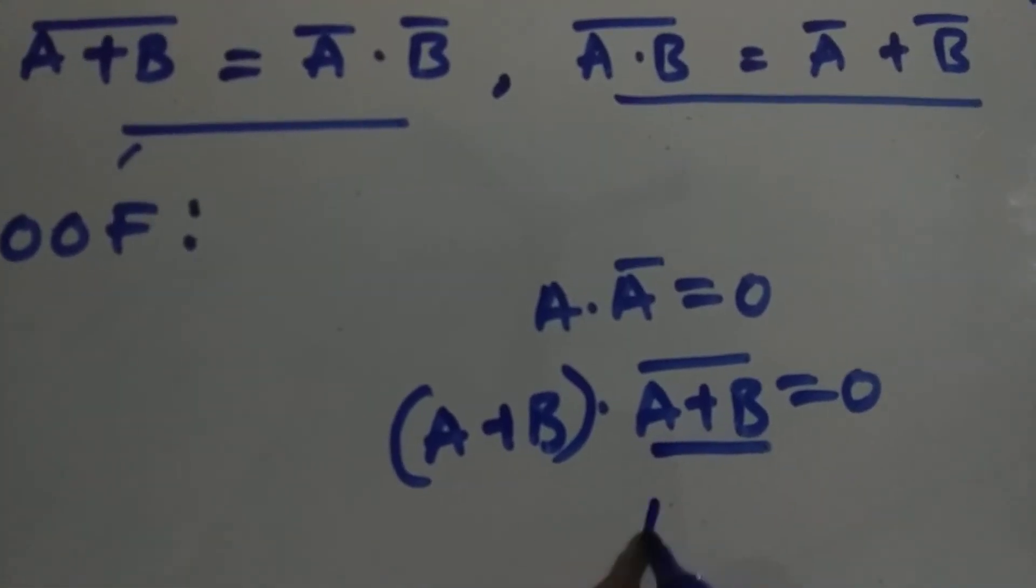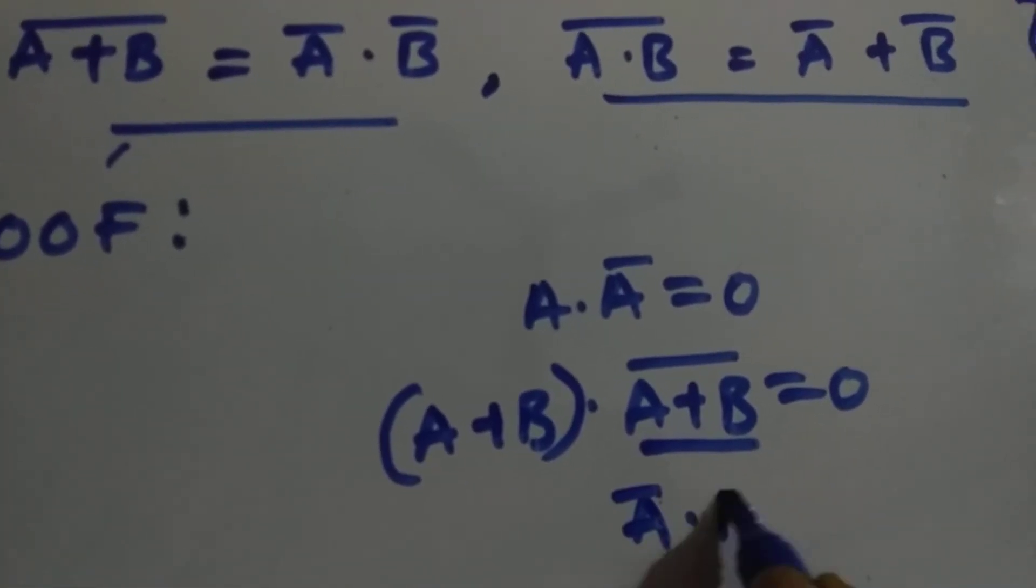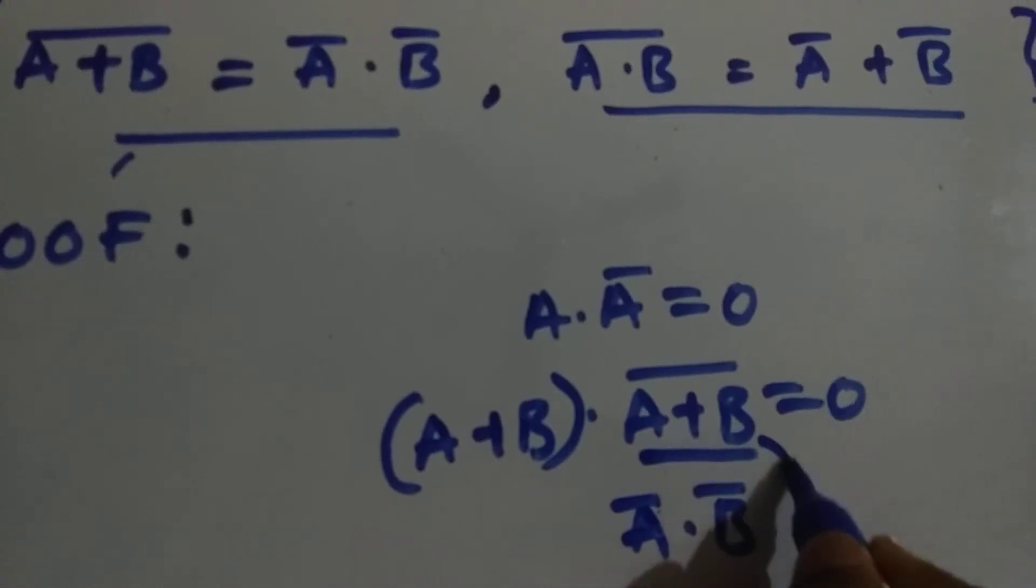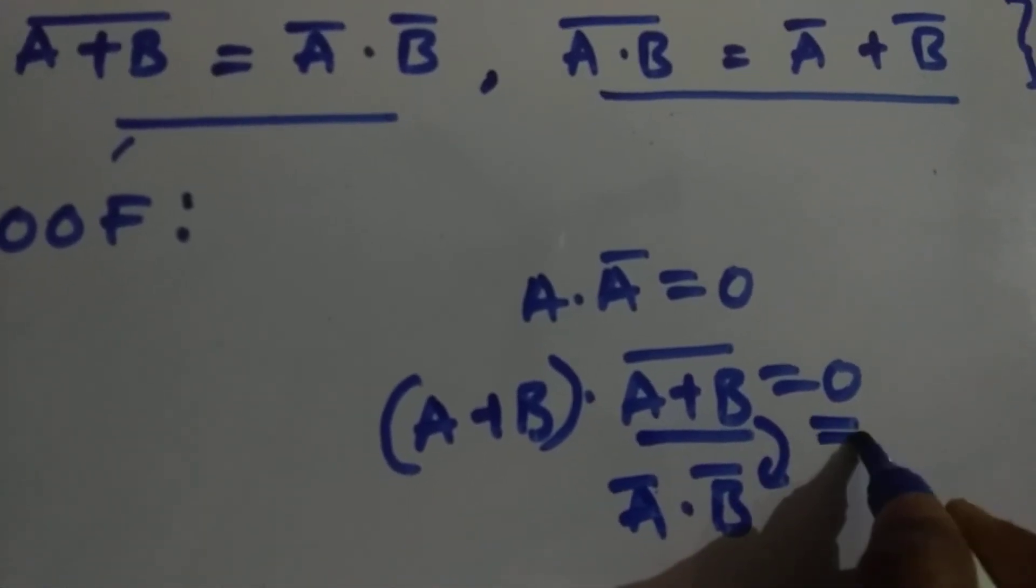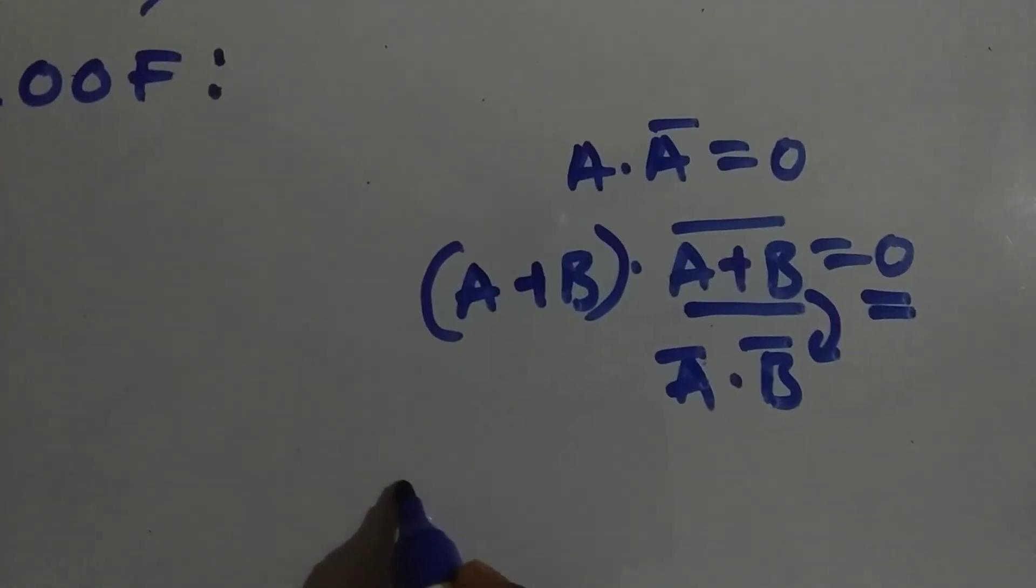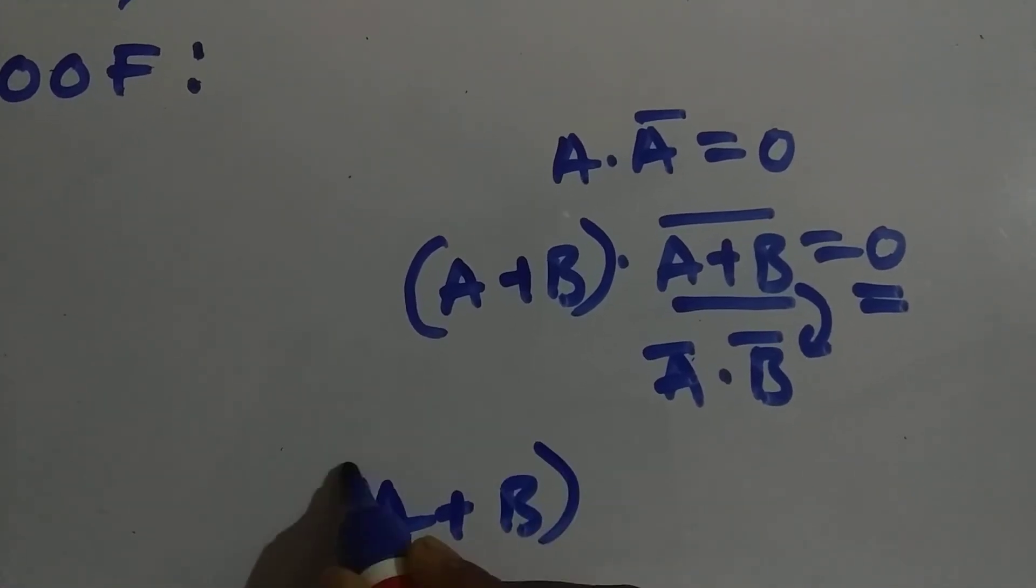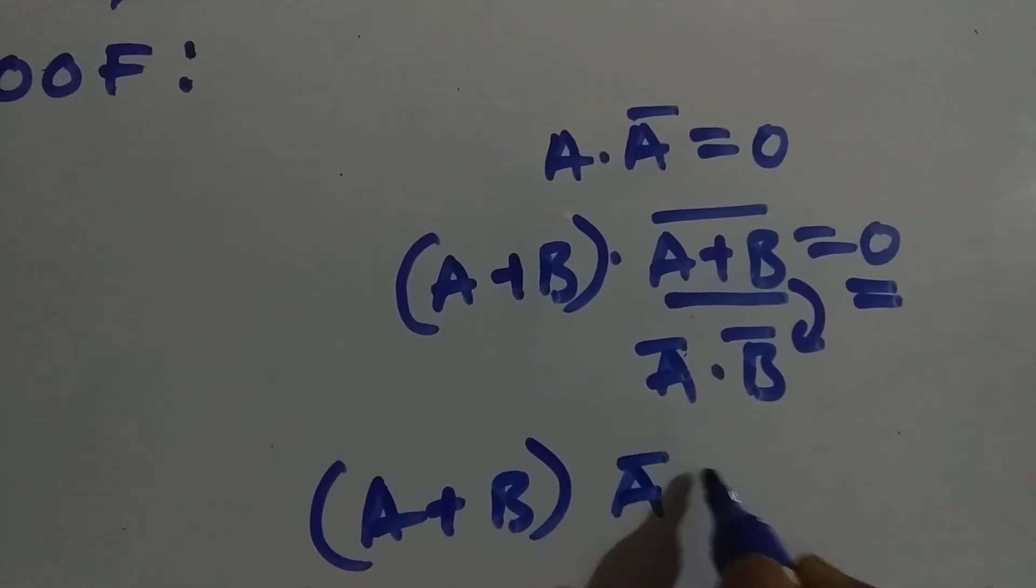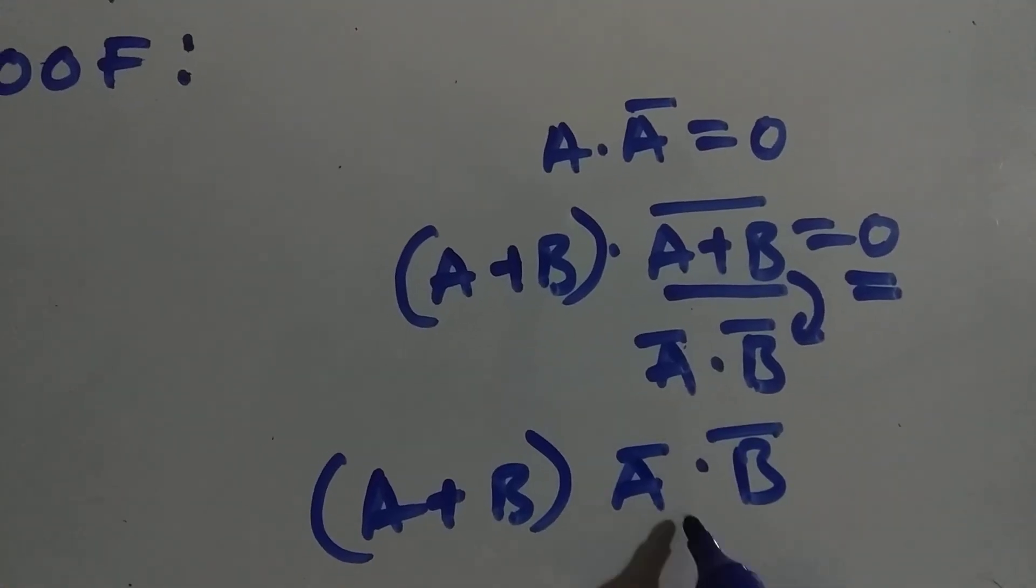Now from De Morgan's law it is A bar dot B bar. If this equals to this, then the answer should be 0. So let's substitute and see. A plus B into A bar dot B bar. So multiply it.